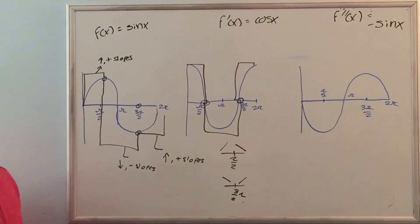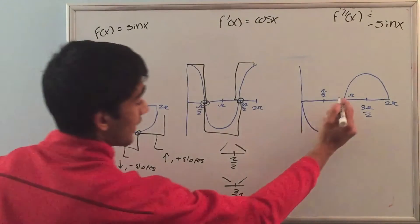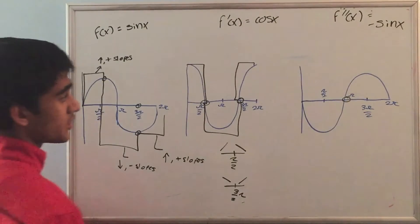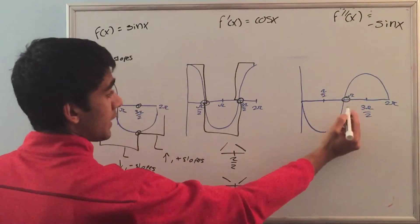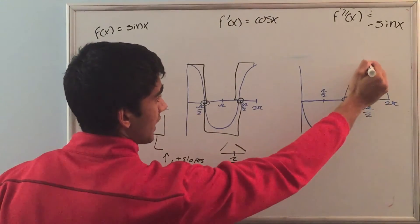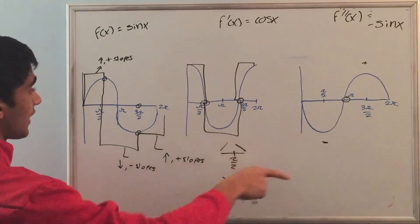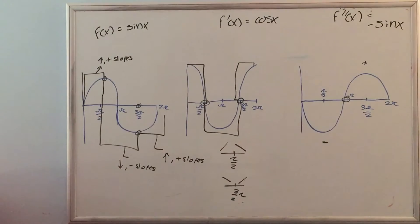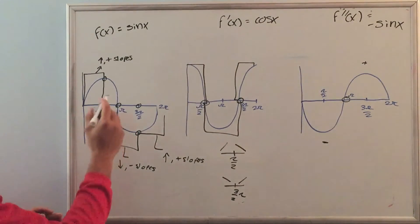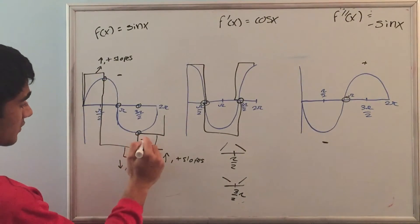We get another thing from the second derivative: points of inflection. When we set the second derivative equal to 0 — that's at pi — we can see that the concavity changes. At the left of pi we have a negative concavity, and right of pi we have a positive concavity. So at pi there is a point of inflection. And notice, at that same point in the original function f of x equals sine of x at pi, the concavity changes — over here we have negative concavity, and over here we have positive concavity.